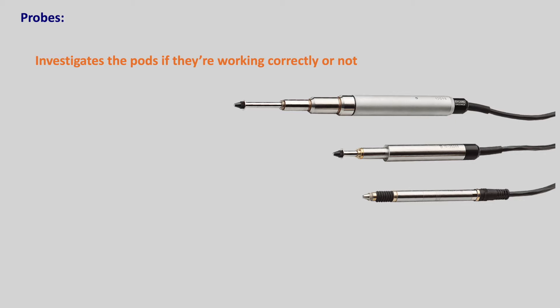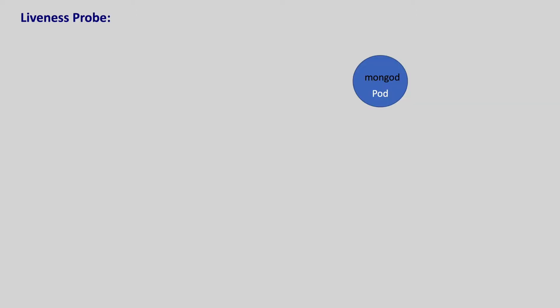There are three different types of probes that Kubernetes provides: liveness probe, readiness probe, and startup probe. Let us learn about each one of them, starting with liveness probe.